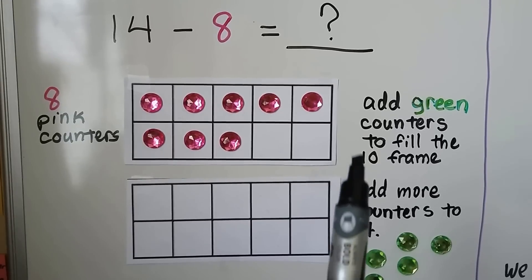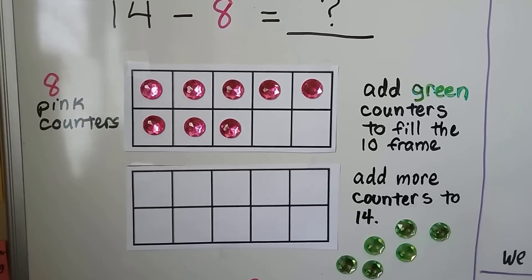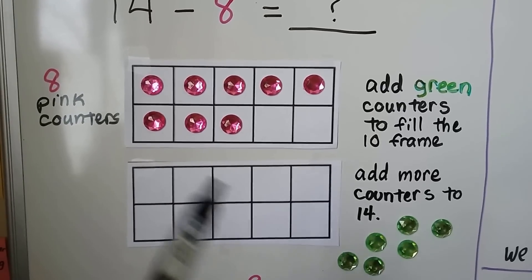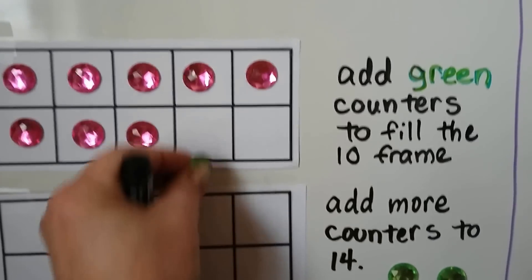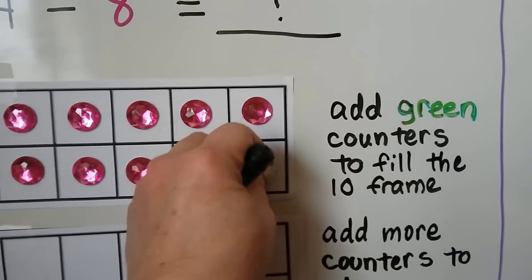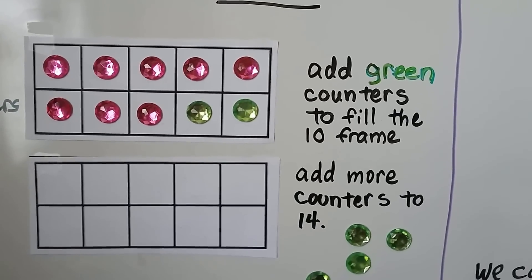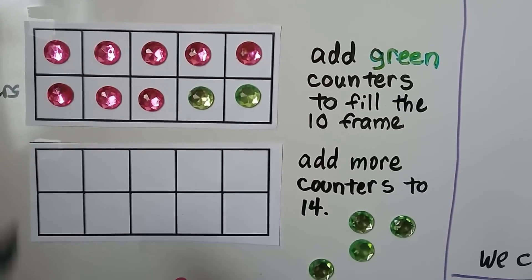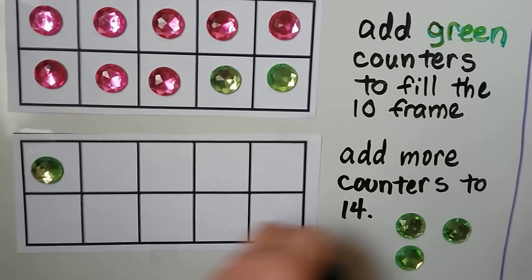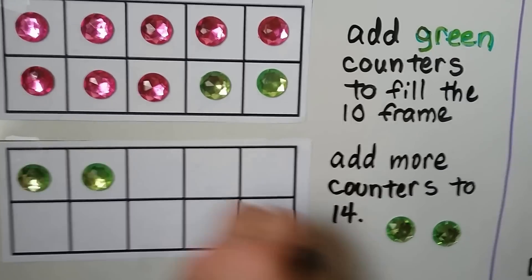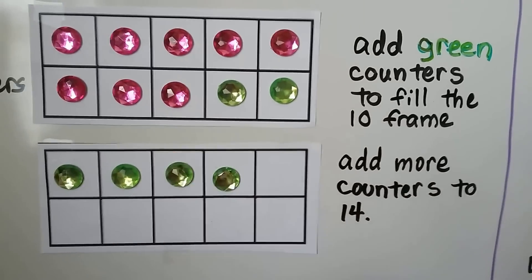We add any color counter — we can add green counters to fill the 10 frame. We have eight, nine, ten. We add more counters to get to 14: ten, eleven, twelve, thirteen, fourteen.